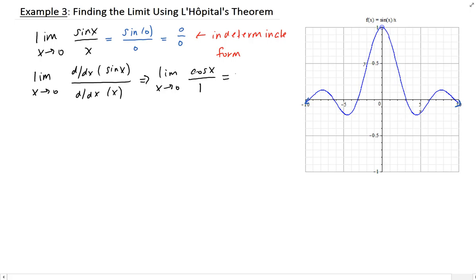So taking the limit of that as x approaches 0, you get cosine of 0 over 1, which gives you 1. Therefore, the limit of the original function, sine x over x, is equal to 1.